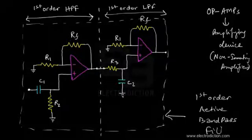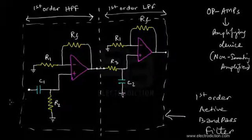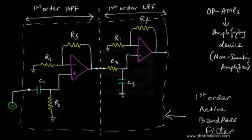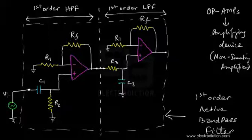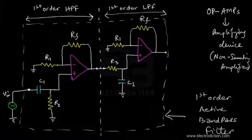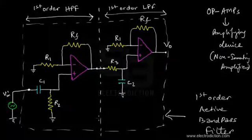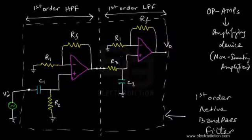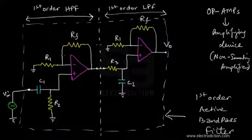We connect an AC signal generating source Vin over here — it provides variable frequencies of input signals. The output voltage is obtained from this particular end. We can see that the output of the high pass filter acts as the input to the low pass filter, and the overall output is obtained from the output of the low pass filter stage.